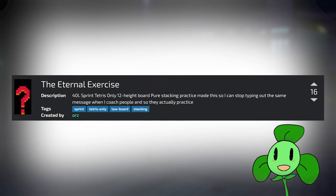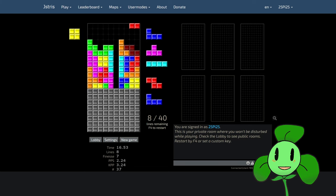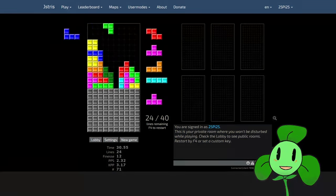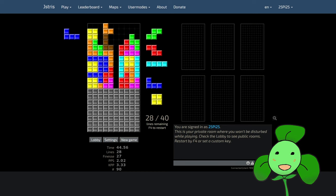So by the time you get to B rank, you want to have mastered stacking up and sending a Tetris. If not, you can always do the Eternal Exercise, linked in the description. In this exercise, all you have to do is send ten Tetrises, and you can't send any less.